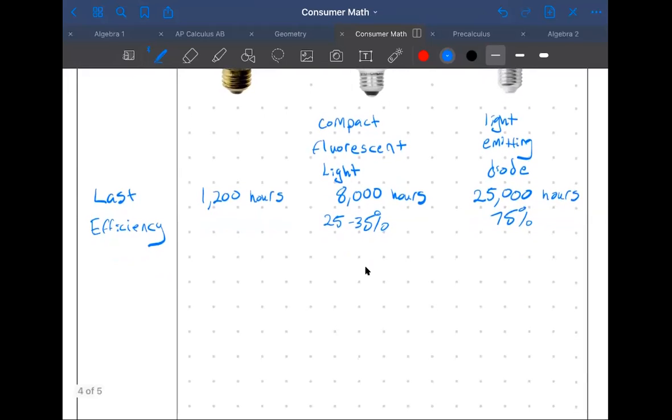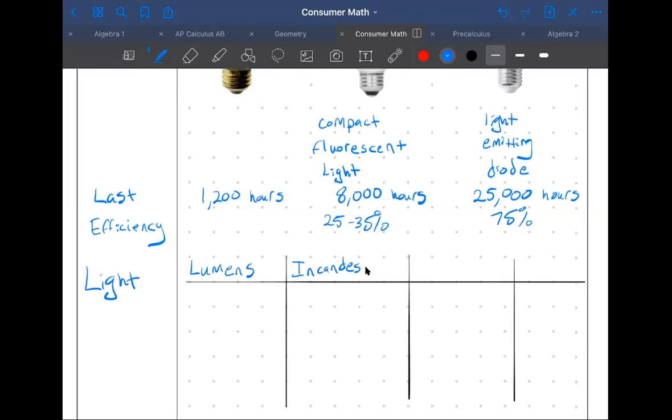Let's talk about light. Light is measured in units of lumens. So I'm gonna make a table down here with four columns. I need lumens, let's just call this one incandescent, CFL, and LED.